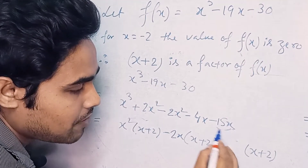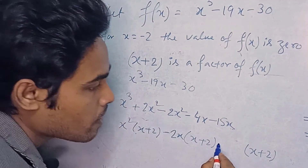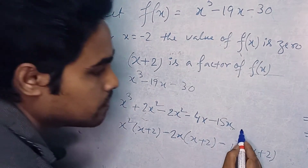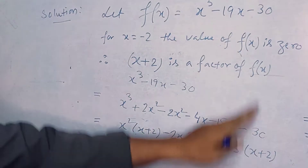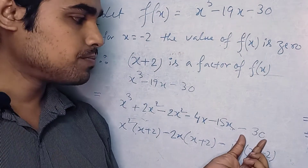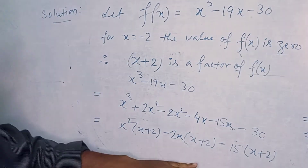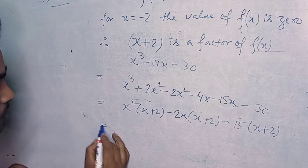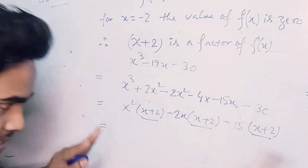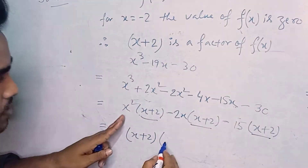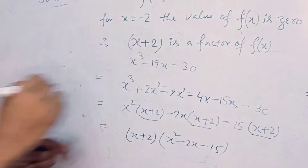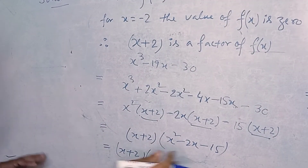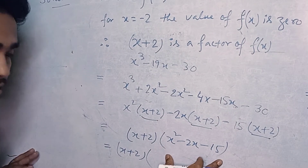We have to adjust this minus 15x from here. So writing minus 15x: minus 15x into x gives minus 15x, and minus 15x into 2 gives minus 30. The last term minus 30 is here — always remember, if the last term equals the last term of the given question, our calculation is correct. Taking x plus 2 as common from the three groups, the remaining terms are x squared minus 2x minus 15.